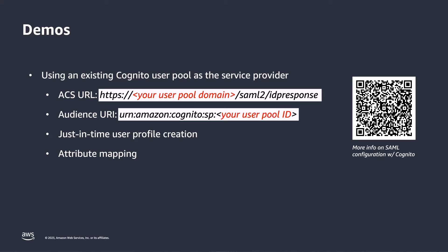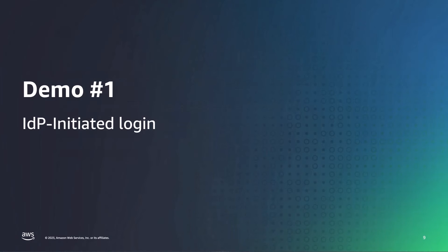For both demos, I will be using an existing Amazon Cognito user pool. Therefore, I know the assertion consumer service URL, also known as the ACS URL. This is the endpoint of your Cognito user pool that will receive the SAML response from your identity provider. I also will know the audience URI of the user pool, also known as entity ID. This indicates the intended recipient and audience for the SAML assertion. Both of these values will be needed when integrating with a third-party SAML IDP. Up first, we'll use AWS IAM Identity Center as the identity provider and we'll configure this to allow IDP initiated login within Amazon Cognito.